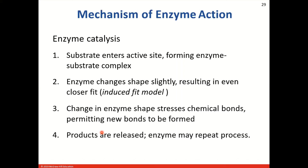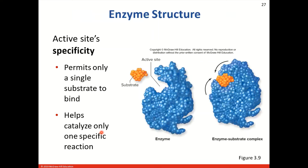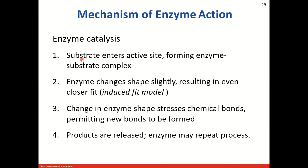When we look at the mechanism of enzyme catalysis, these are the steps that occur for this particular type of reaction. The substrate is going to enter the active site, forming the enzyme-substrate complex. The enzyme changes shape as it surrounds the substrate, resulting in an even closer fit. As the enzyme changes shape, that shape change actually stresses the chemical bonds and can cause new bonds to be formed. Once this occurs, the products are released and the enzyme can go back and repeat the process somewhere else.